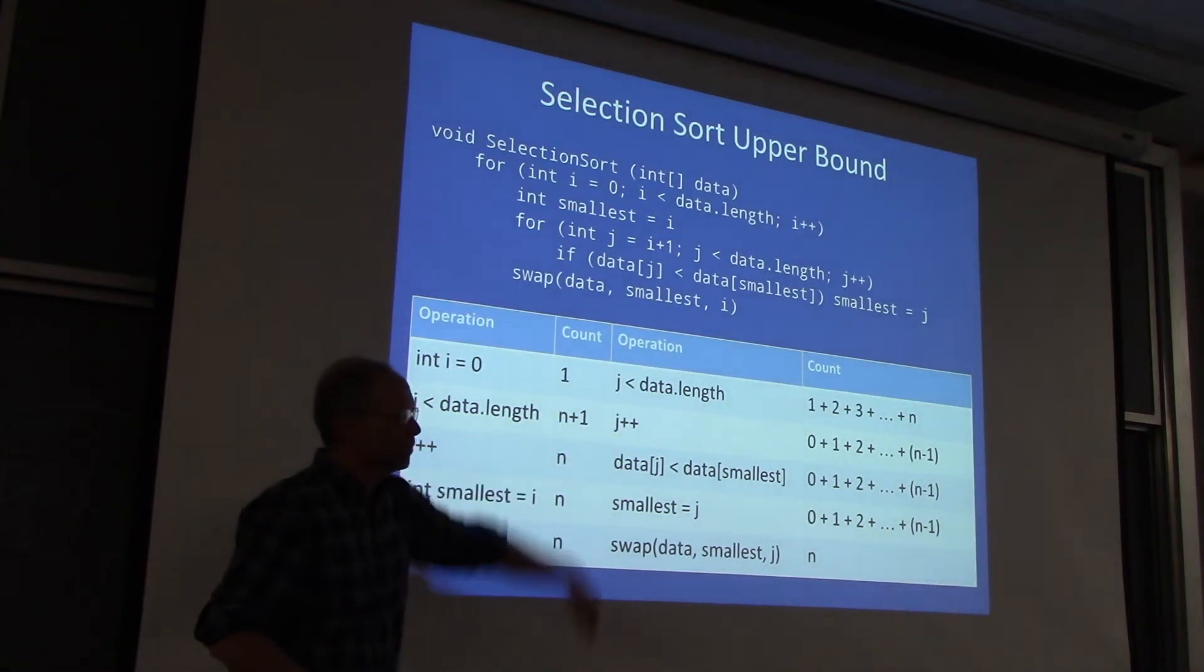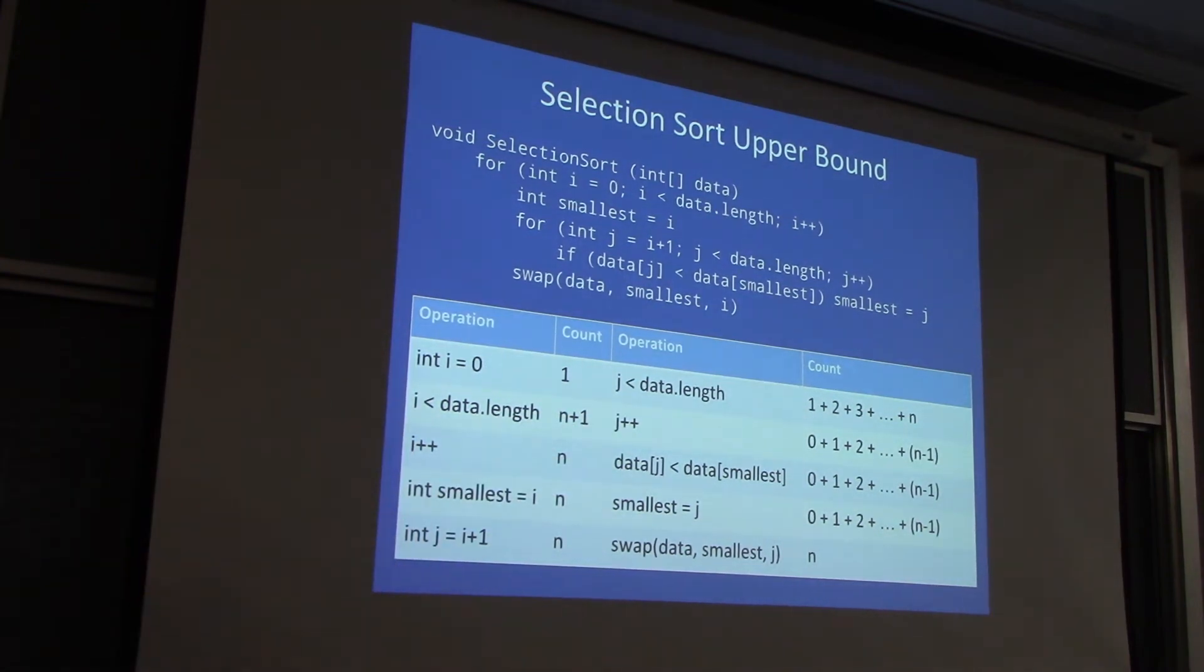We need to simplify these counts, right? I don't like those sums. So what do you do when you have a sum like that?